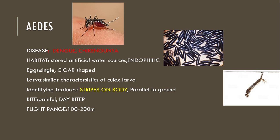Moving on to the next mosquito: Aedes. Aedes causes diseases dengue and chikungunya. It lives in stored, collected, artificial water sources and is endophilic. Characteristics of eggs are single, cigar-shaped, as we can see in this picture. Characteristics of larvae are similar to that of Culex larvae — it is also a bottom feeder and contains a siphon.